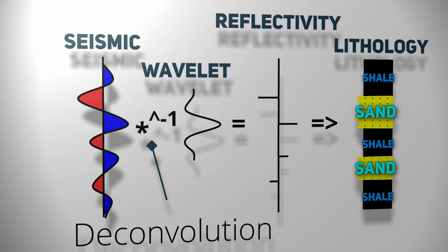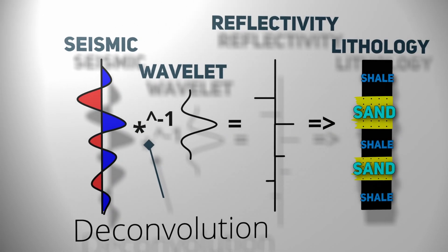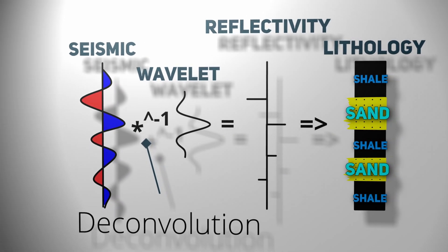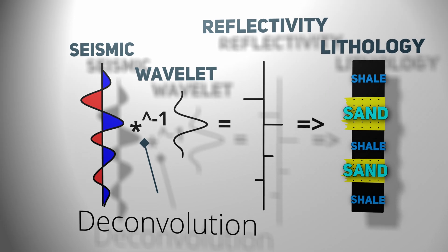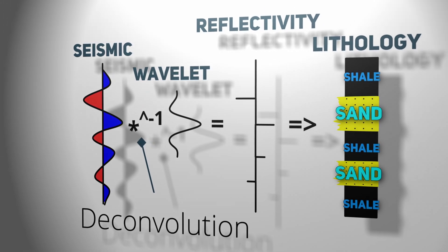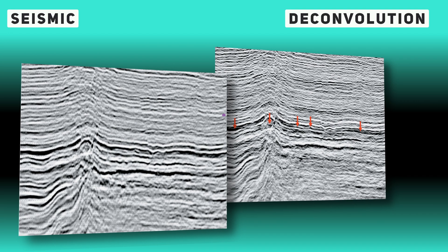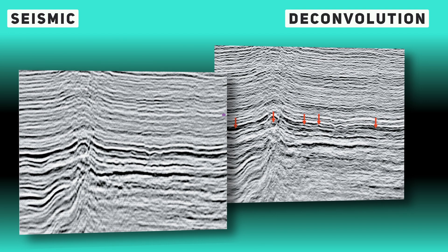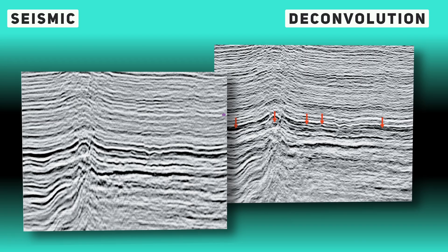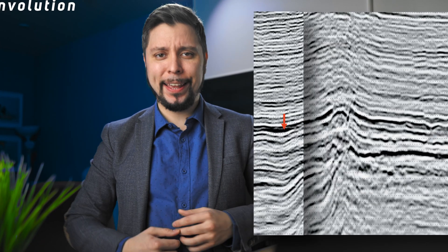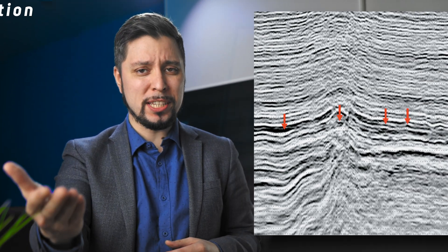One way to achieve improved resolution is through deconvolution, a powerful tool used to remove distortion caused by the seismic source and the propagation of seismic waves. This allows for a more accurate representation of subsurface features, resulting in higher resolution images. However, it is a delicate balance of removing noise without compromising signal integrity.